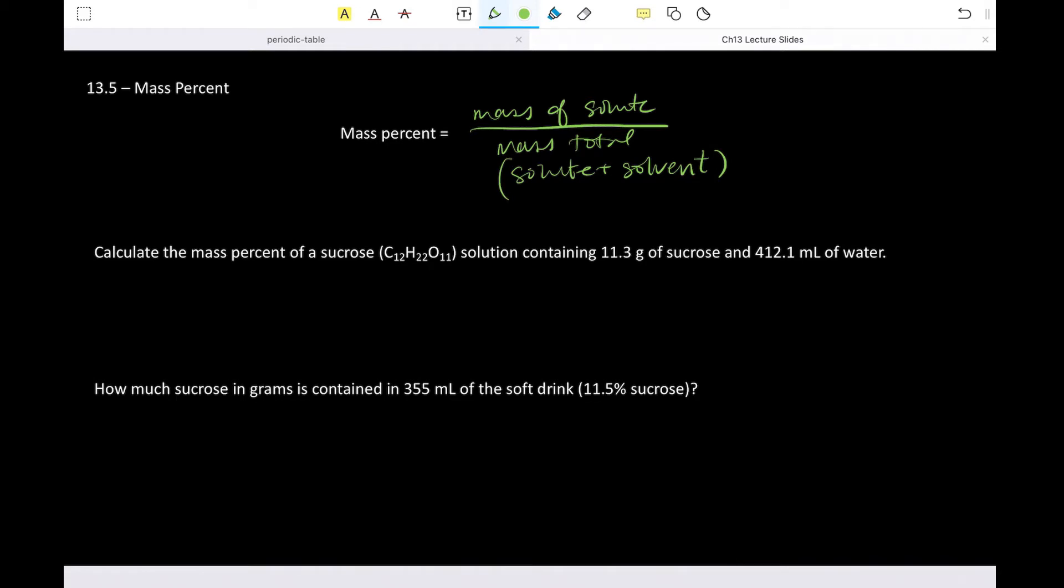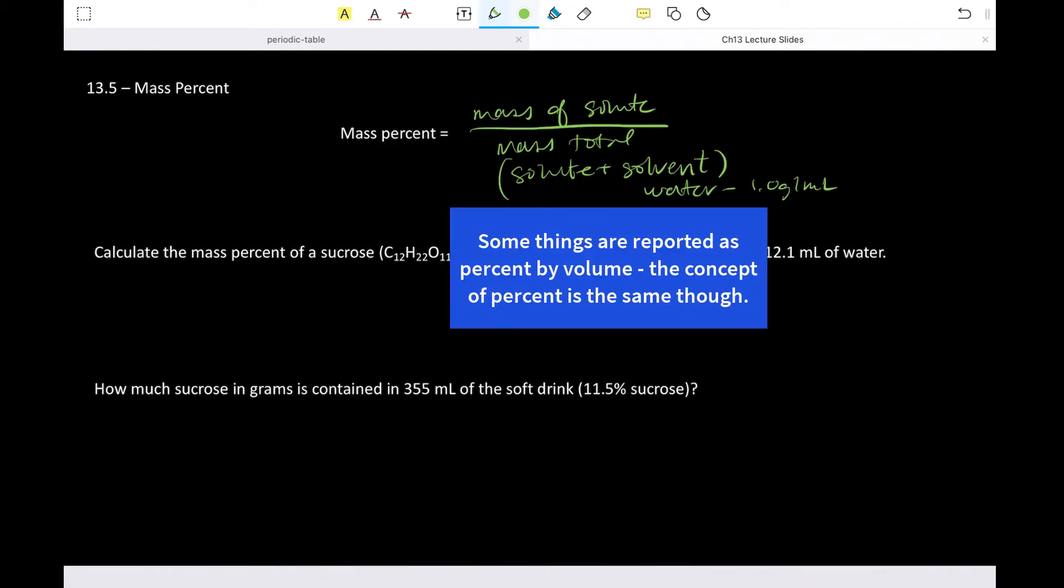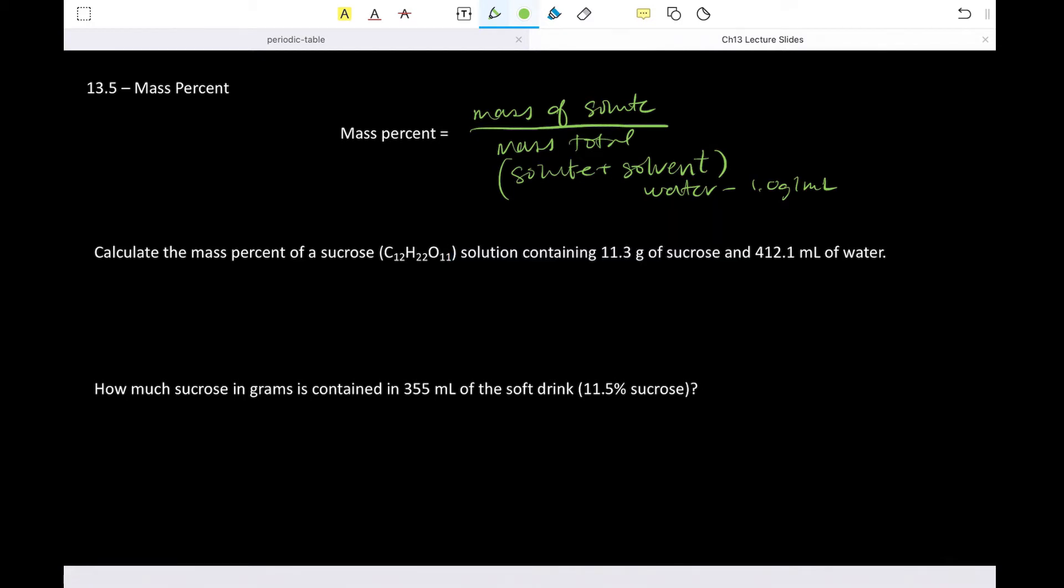And since our solvents are typically water, and you know that the density of water is one gram per milliliter, even if we use volumes, you should be able to get that to a mass so that way you can come up with the total mass. So anyway, mass percent, mass of solute over the total mass. And so very easy to calculate. Yeah, it's very simple.